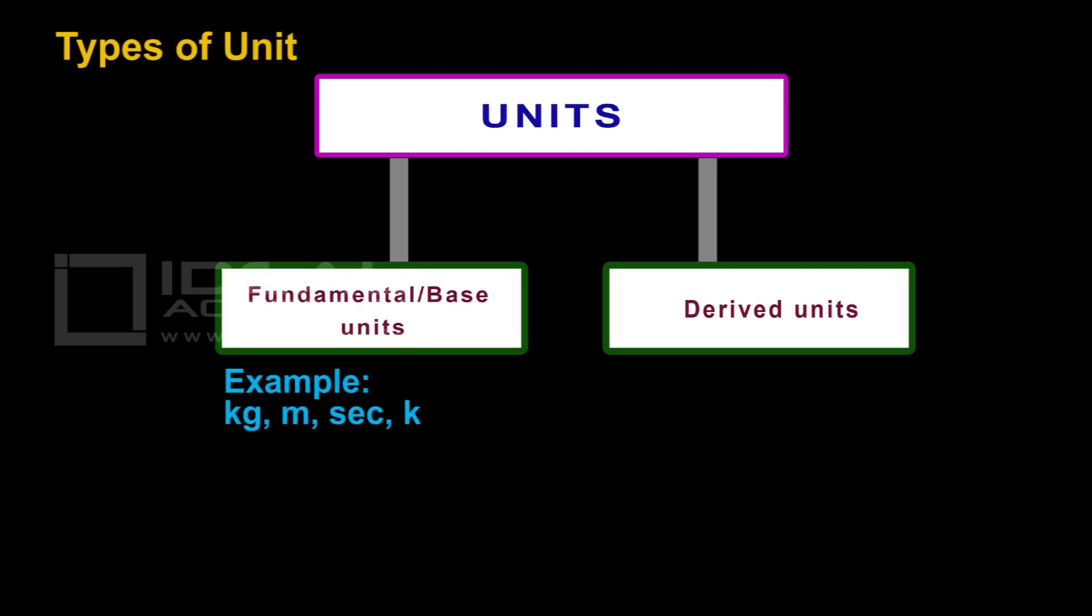Similarly, Derived units are always derived from fundamental units. Derived units examples are: meter square, meter cube, meter per second, kilogram per meter cube. Meter, second, kilogram are all fundamental units. These combinations are derived units. So, derived units are always derived from fundamental units.